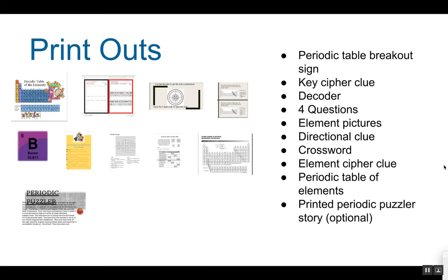You will need to print out the periodic table breakout sign, the key cipher clue which leads them to the pictures of the boron family, the decoder, the four questions, all the element symbols, the directional clue, the crossword puzzle. Remember, you need to also use the invisible ink marker to highlight the boxes on the crossword. Also print the element cipher clue, the periodic table, and if you would prefer not to use the iPad for the story, you can just print the picture as well.